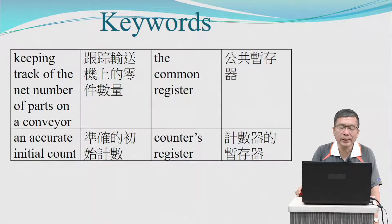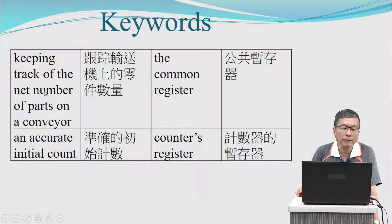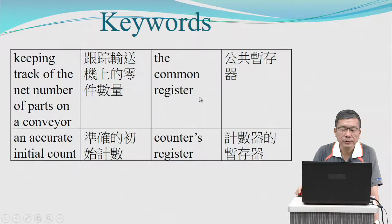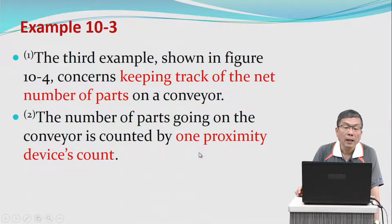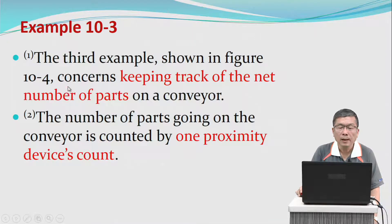Example 3 — the keywords are: keeping track of the net number of parts on the conveyor, the common register, and accurate initial count. The third example, shown in figure 10.4, concerns keeping track of the net number of parts on the conveyor.